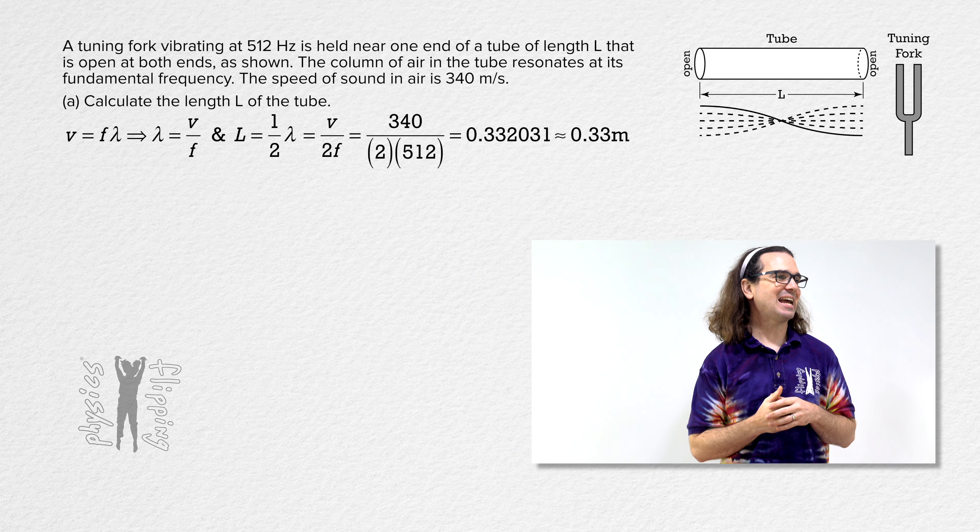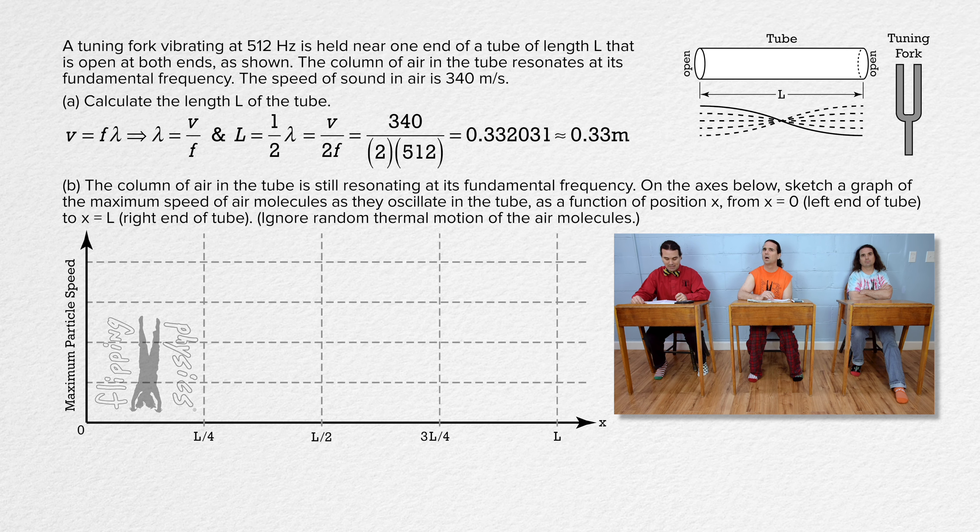Billy, please read and answer part B. Part B. The column of air in the tube is still resonating at its fundamental frequency. On the axes below, sketch a graph of the maximum speed of air molecules as they oscillate in the tube as a function of position x, from x equals 0, left end of tube, to x equals L, right end of tube. Ignore random thermal motion of the air molecules.